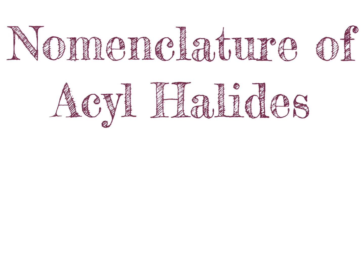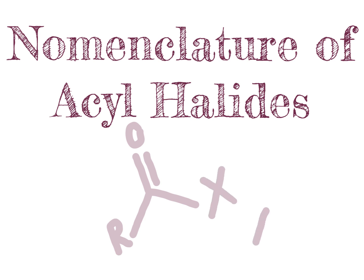In this video, we continue discussing so-called carboxylic acid derivatives by looking at the nomenclature of acyl halides. An acyl halide is a molecule that has a carbonyl group directly bonded to an R group — carbons or hydrogens — and also bonded to a halogen atom, which we refer to as X. The carbonyl group plus the R group directly bonded to it is referred to as the acyl group.